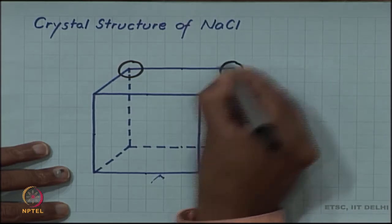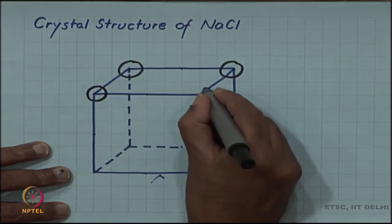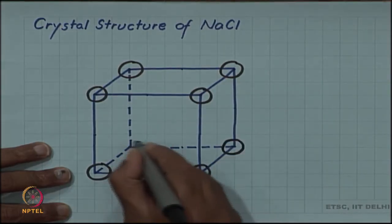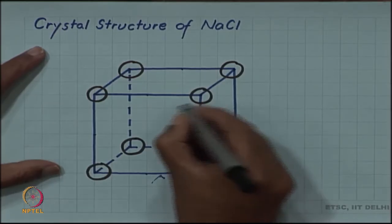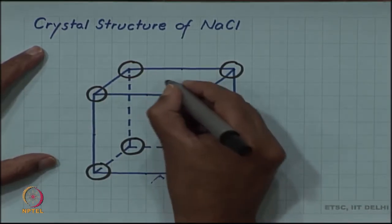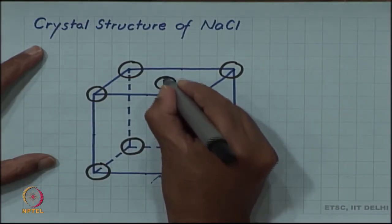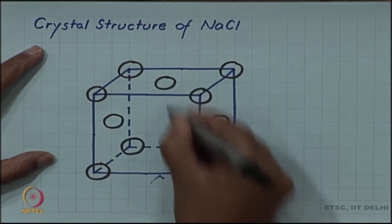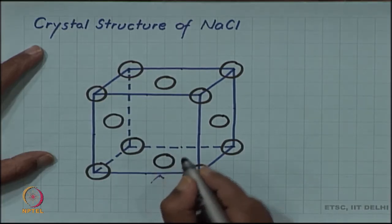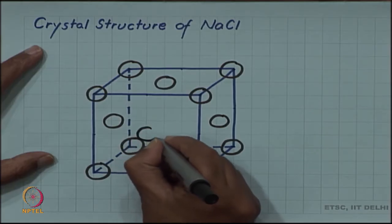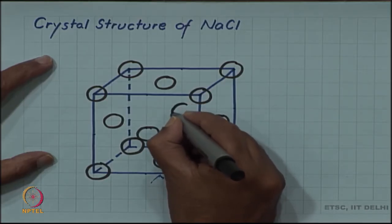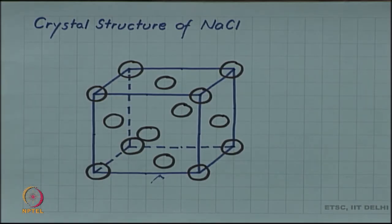In this cubic unit cell, let me place the chloride ions. These are at the corners, and also on the face centers - left face, right face, top face, bottom face, front face, and back face. These are the 14 chloride ions in an FCC unit cell.